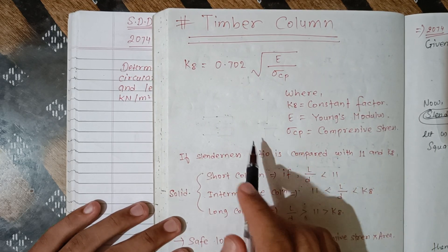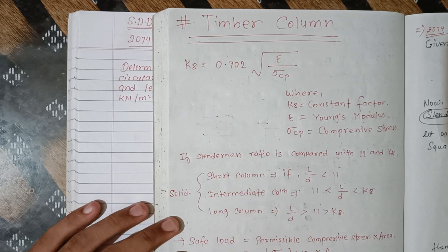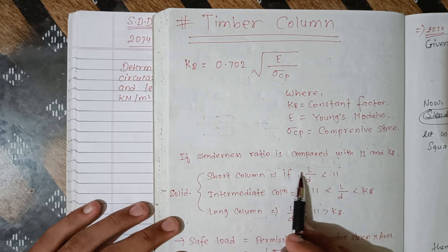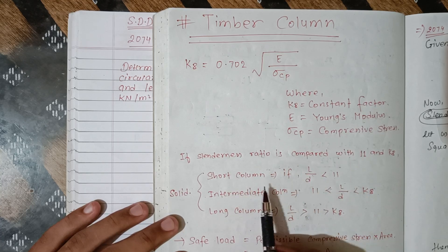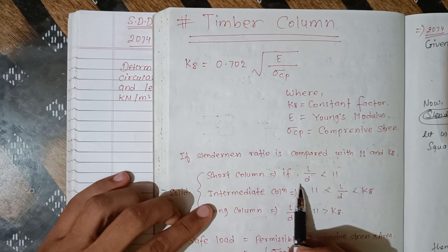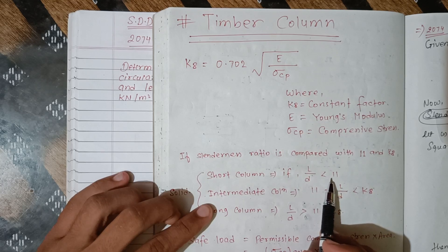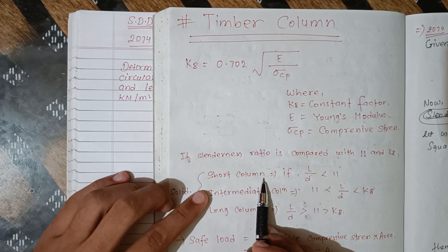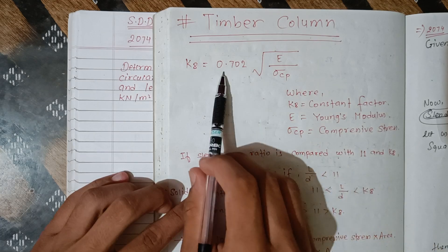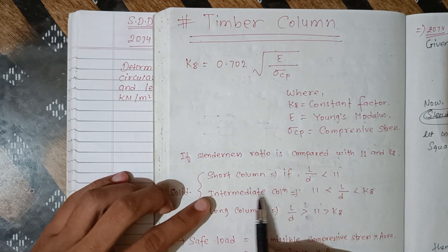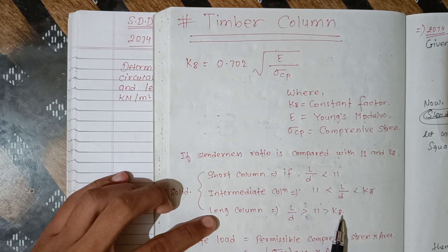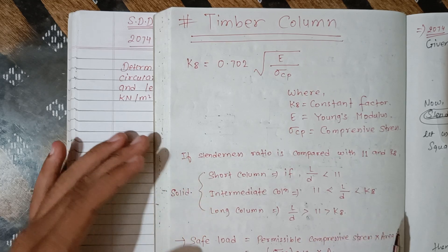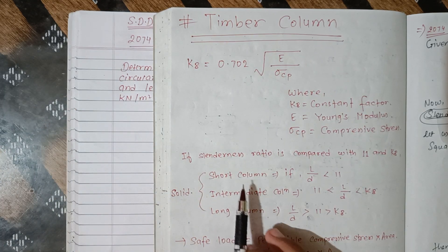...compare the ratio L by D. If L/D is very small — less than 11 — it is a short column. Between 11 and K8 it is an intermediate column, and above K8 it is a long column.